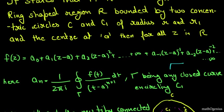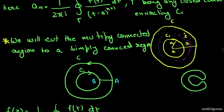Now we have to prove this theorem. We will take the multiply connected region and make a cut — this is how we did it in the Cauchy integral theorem proof. Then we will take the Cauchy integral formula and substitute our terms, just as we did in the Taylor series theorem proof.